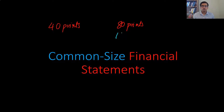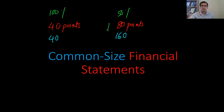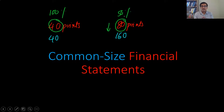That's fair. So let's suppose this one was out of 160 and this one was out of 40. So now you might say, I got 100% here and I got 50% here, so I performed poorly on this one. Even though the total number of points here was more, it didn't make sense to compare them directly. You compare the percentages to neutralize the effect of the total number of points. And that's exactly the rationale for constructing common size financial statements.